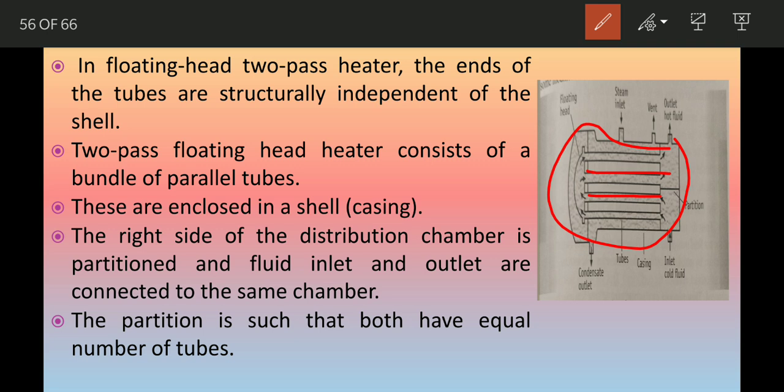The partition is such that both have equal number of tubes. The left-hand side distribution chamber is not connected with the casing. That's why it is structurally independent.